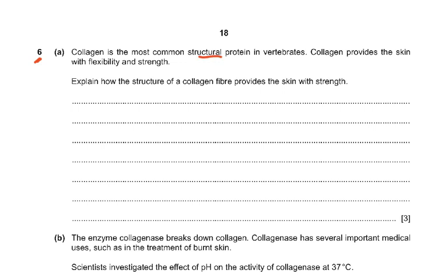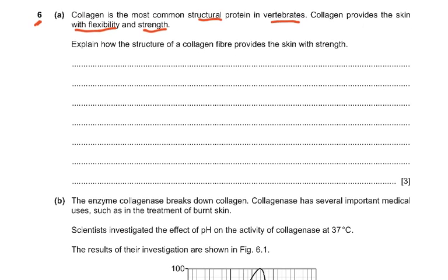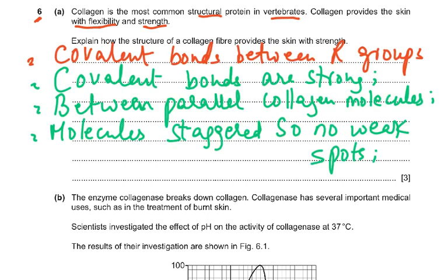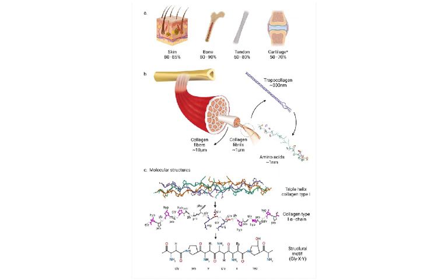Question 6: collagen is the most common structural protein in vertebrates, providing skin with flexibility and strength. To explain how collagen fibre structure provides strength: covalent bonds form between the R groups (side chains) of the collagen molecule — covalent bonds are strong. These bonds form between parallel collagen molecules. The ends of the molecules are staggered, which removes weak spots and gives greater strength. Collagen is found in skin, bone, tendon, and cartilage.